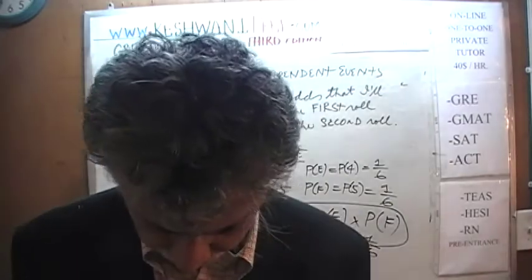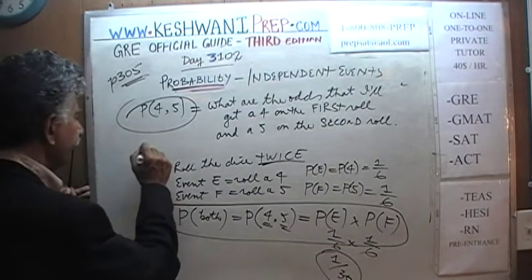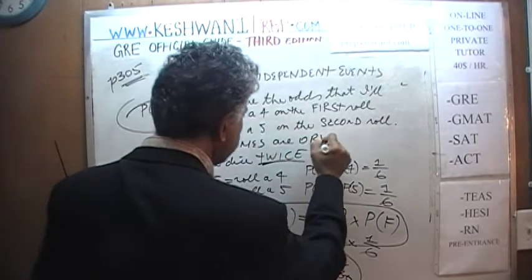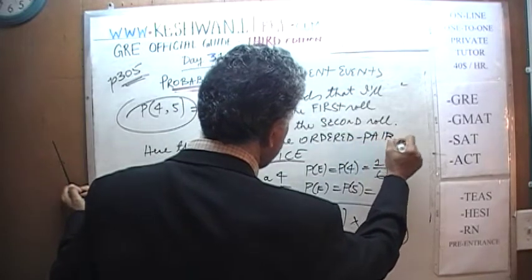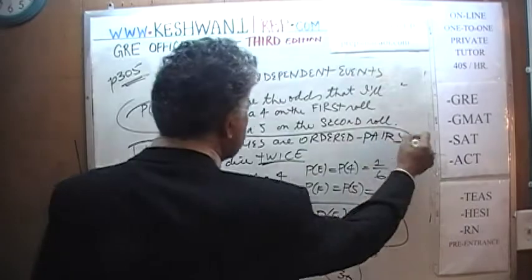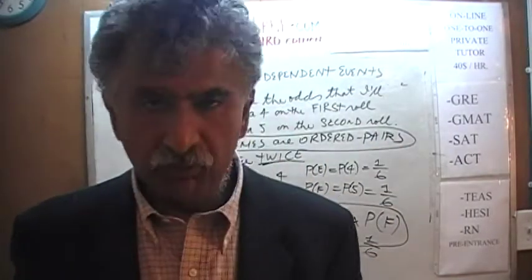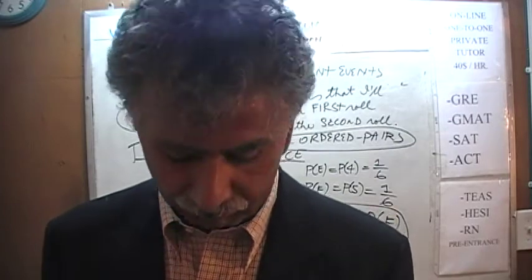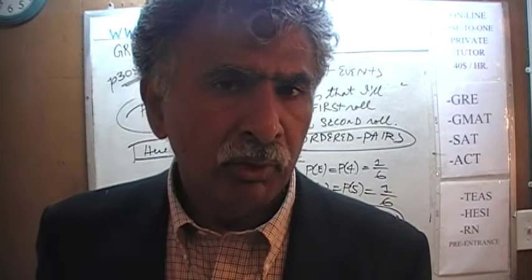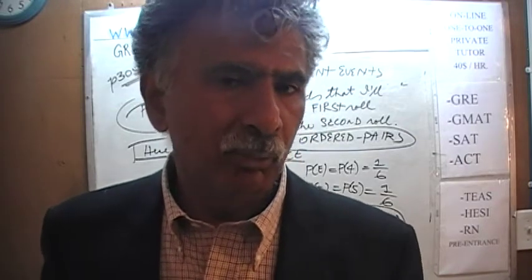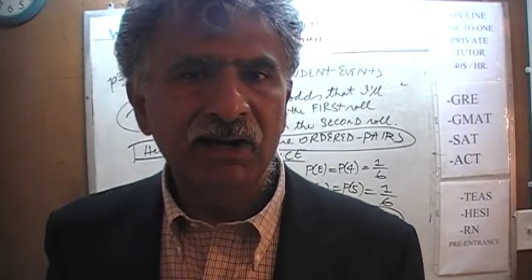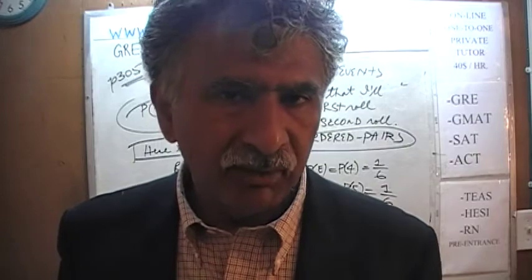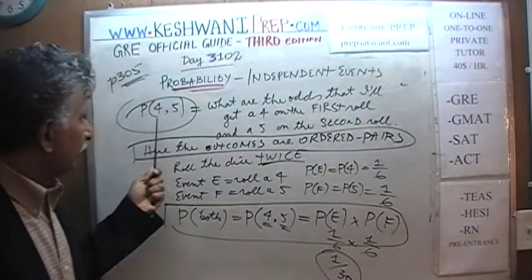The outcomes here are ordered pairs because the two events physically mean the dice is being rolled twice. This was not the case with mutual exclusivity, where we rolled the dice only once and asked what are the odds that both events happen at the same time in the same roll. Here, because we are rolling the dice twice, the favorable outcomes are written as ordered pairs.